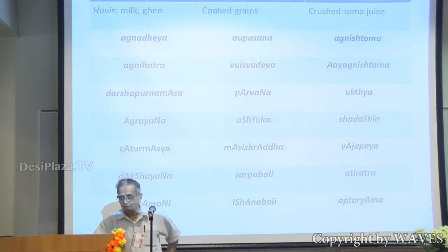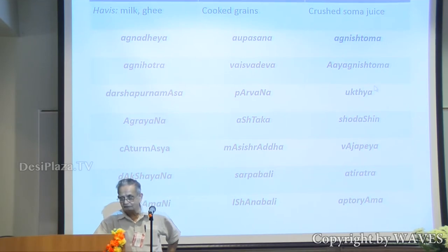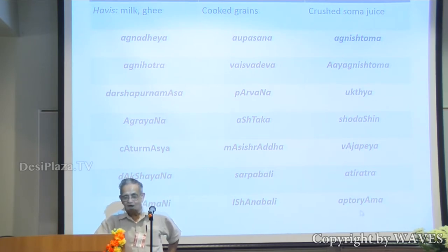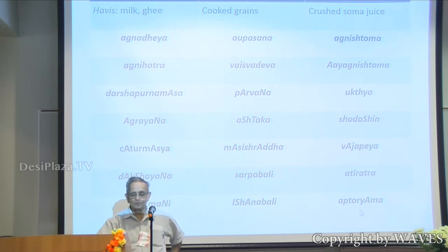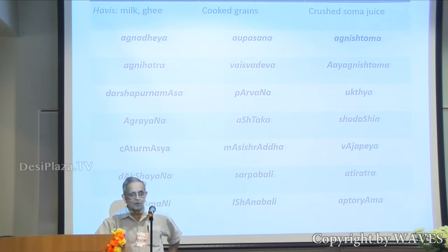In the Soma Yajna, you have Agnishtoma, Vatiagnishtoma, Vajapeya, Apthoryama, and so on. I'm going to talk mainly about Agnishtoma.